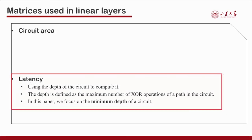Another metric is latency. More latency leads to more time to execute encryption. We use the depth of the circuit or the matrix to compute it. The depth is defined as the maximum number of XOR operations along any path in the circuit. In this paper we always focus on the minimum depth, and our experiments show that circuits with minimum depth execute encryption faster in hardware.